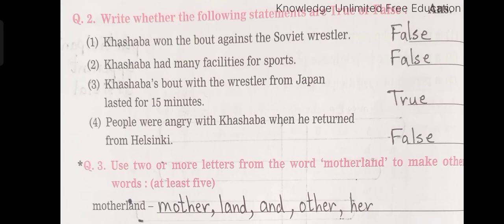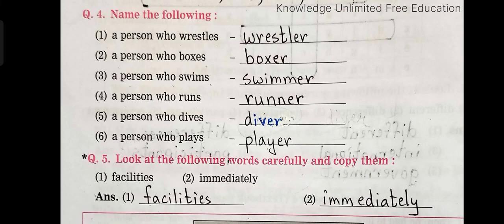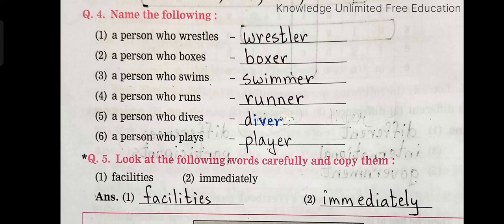Question number 3: Use two or more letters from the word 'motherland' to make other words. We have: mother, land, other, her. Question number 4: Name the following. A person who wrestles — wrestler. A person who boxes — boxer. A person who swims — swimmer. A person who runs — runner. A person who dives — diver. A person who plays — player. Question number 5: Look at the following words carefully and copy them. The words here are 'facilities' and 'immediately.'